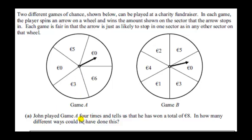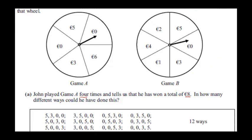John played Game A four times and tells us that he has won a total of eight euros. So how many ways can that happen? All the different ways are listed here. For one thing, six euros cannot have appeared.